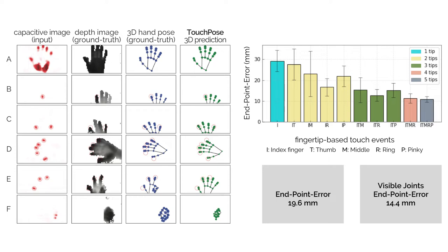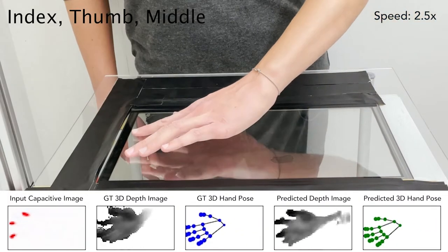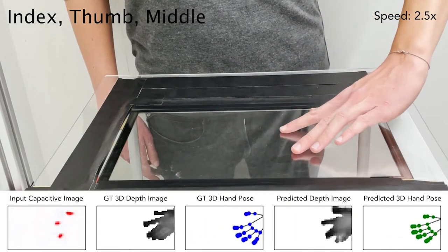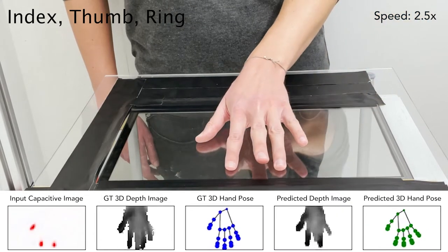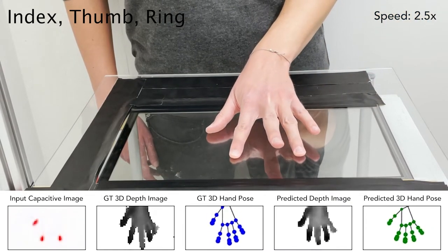TouchPose recovers hand poses with an endpoint error of 19.6 mm per joint, which drops to 14.4 mm when considering joints corresponding to fingers in contact with the surface. Our system can work in both portrait and landscape orientation of devices and can generalize across participants and hand gestures that it has never seen before.